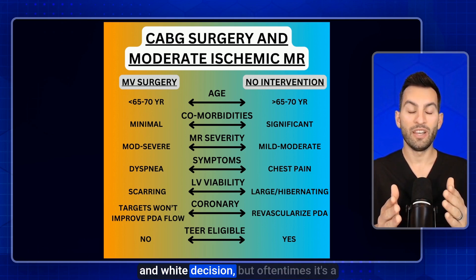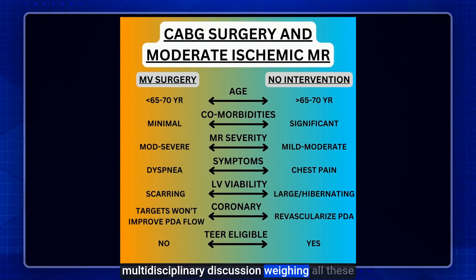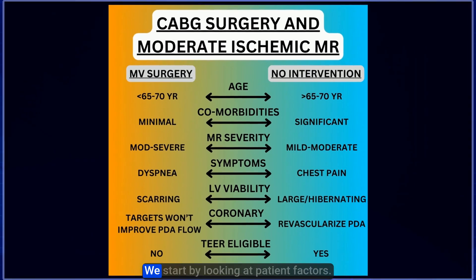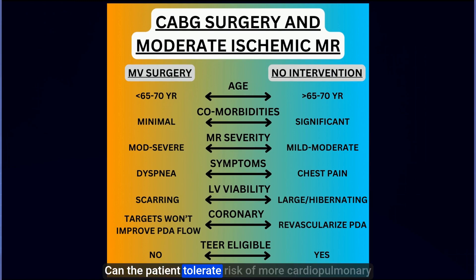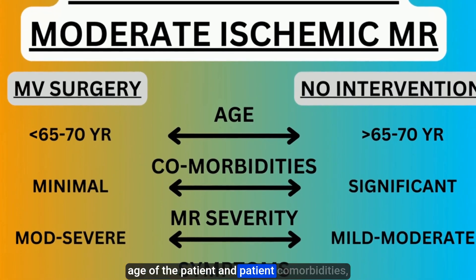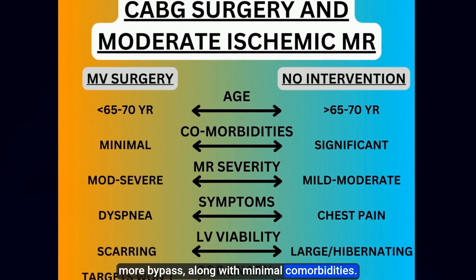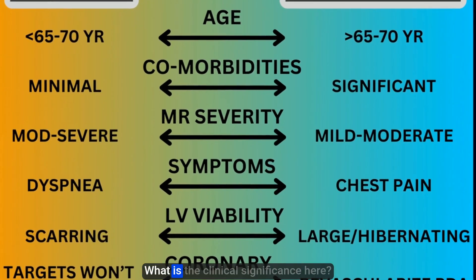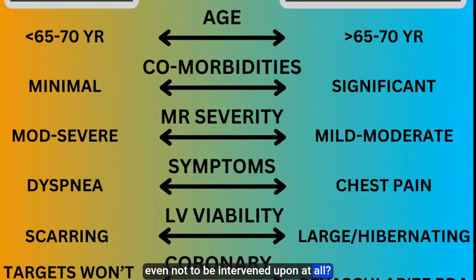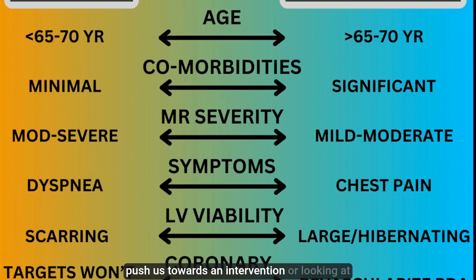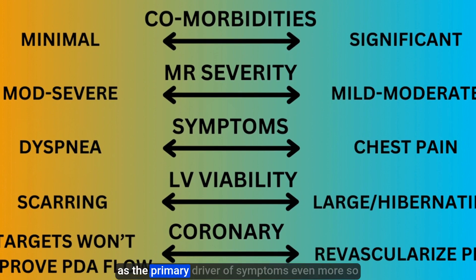There are many factors and it's not a black-and-white decision — it's a multidisciplinary discussion. We start by looking at patient factors: can the patient tolerate the risk of more cardiopulmonary bypass time for potential MR reduction benefit? Younger age and minimal comorbidities may favor accepting that additional bypass time. Next, we assess mitral valve severity — is the MR clinically significant enough that it can't wait? We use TEE to determine if it's mild-moderate versus moderate-to-severe, which may push toward intervention. Patient symptoms also matter: dyspnea on exertion as the primary driver, more so than angina, may signal greater MR significance.